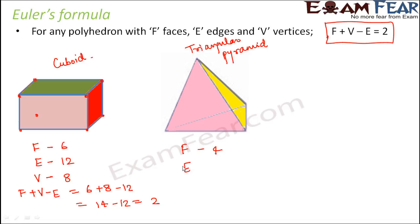How many edges? 1, 2, 3, 4, 5 and 6. 6 edges. And how many vertices? 1, 2, 3, 4.